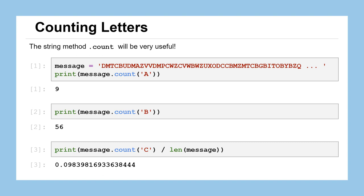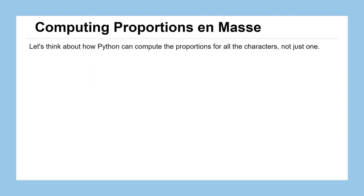When we do that, we can see that in this particular ciphertext, the character C takes up almost 10% of the overall message, because its proportion is .098. So let's figure out how we can use Python to compute the proportions not just for one letter at a time, but for all of the characters in a message.